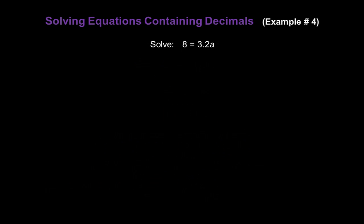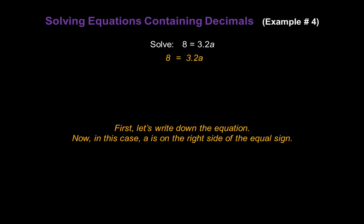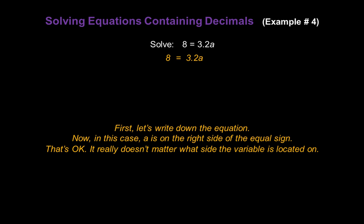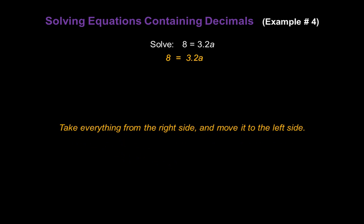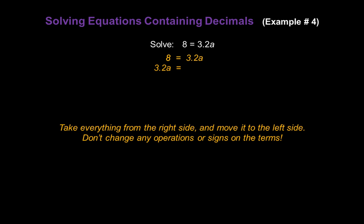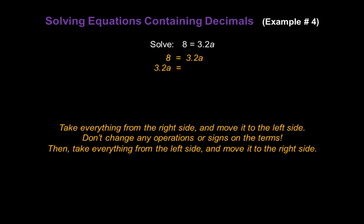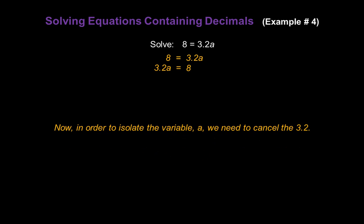Now let's solve 8 equals 3.2a. Again, let's write down the equation: 8 equals 3.2a. In this case, our variable a is on the right side of the equal sign, and that's okay — it really doesn't matter what side the variable is located on. But for consistency, I'm going to move it to the left side. Take everything from the right side and move it to the left side — don't change any operations or signs, just slide it over. So 3.2a moves to the left, bring the equal sign down, and take everything from the left side and move it to the right. And we have the exact same equation.